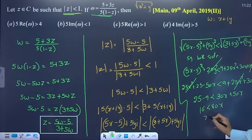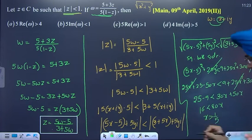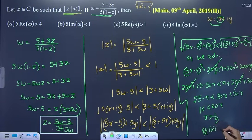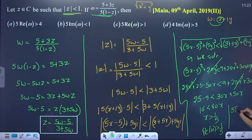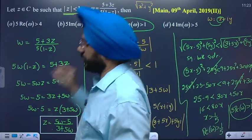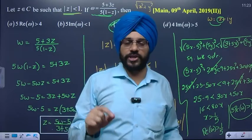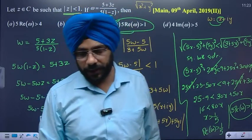Here x means the real part of w. So real part of w is greater than 1 by 5. Multiplying by 5: 5 times real part of w is greater than 1. Option C is the final answer. Clear students — please like our channel and subscribe. Thank you, students.